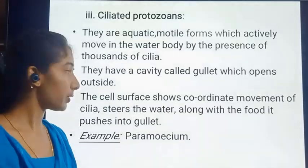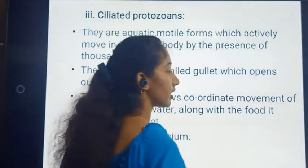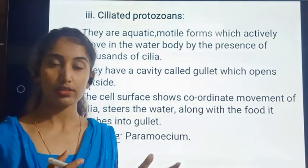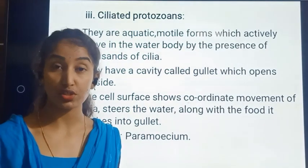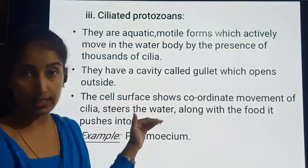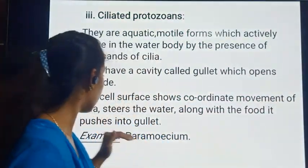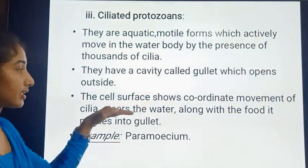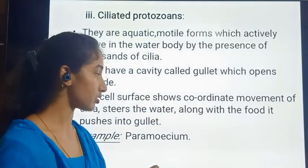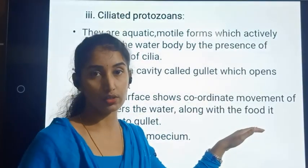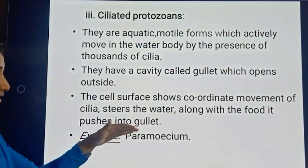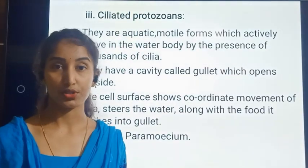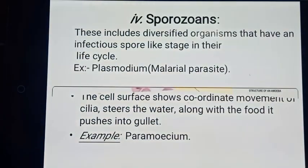All the cilia work at a time in a specific direction, moving in a very coordinated manner. They steer the water, pushing it into the gullet. The best example for ciliated protozoan is Paramecium, which has thousands of cilia.